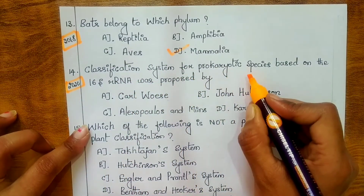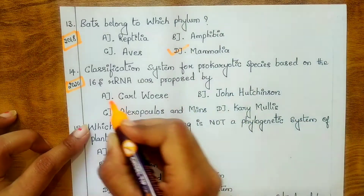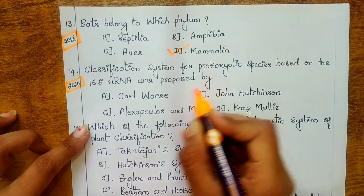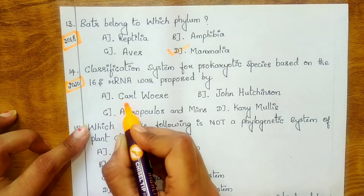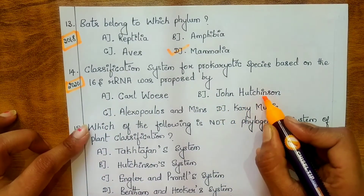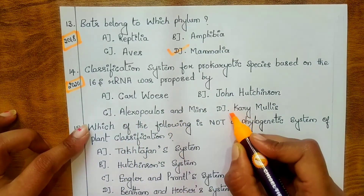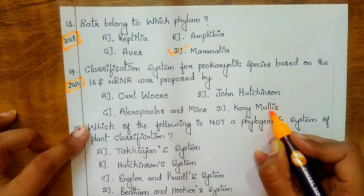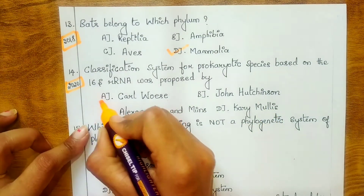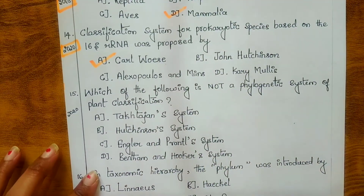Fourteenth question, from 2020: the classification system for prokaryotic species based on 16S rRNA was proposed by whom? Options are: A. Carl Woese, B. John Hutchinson, C. Alexopoulos and Mims, D. Kary Mullis. The answer is option A — Carl Woese.